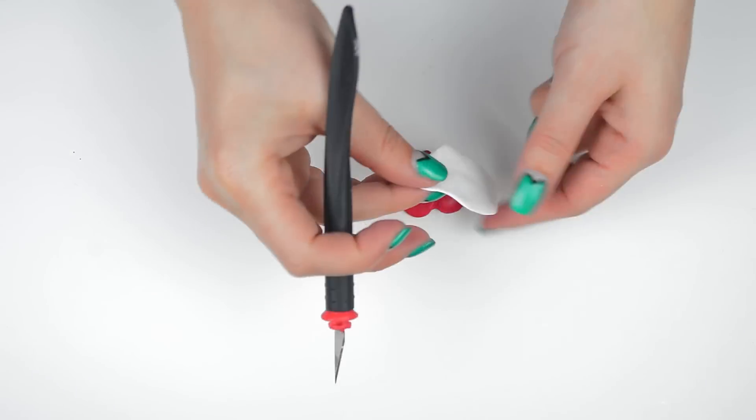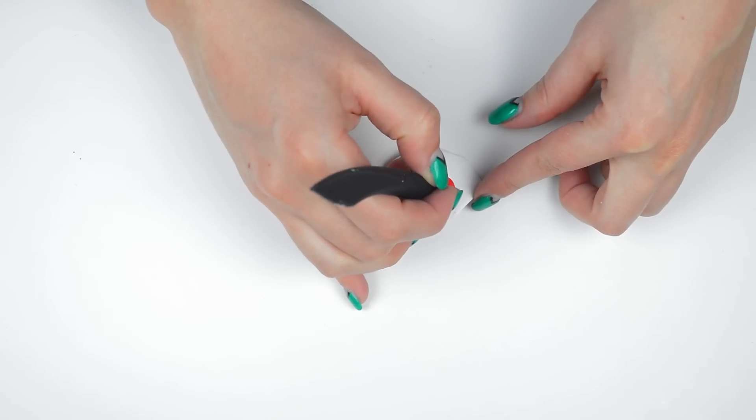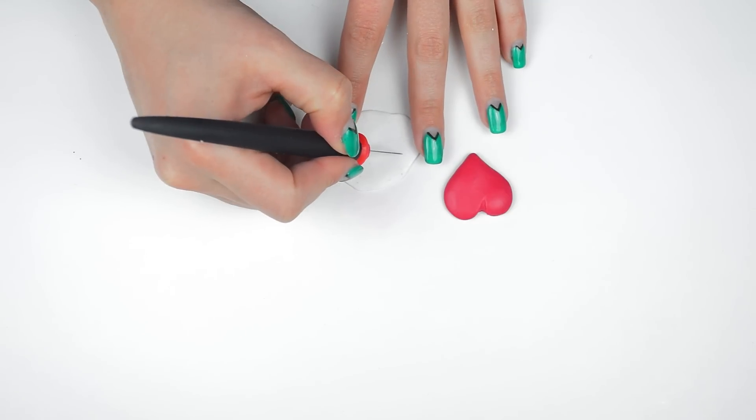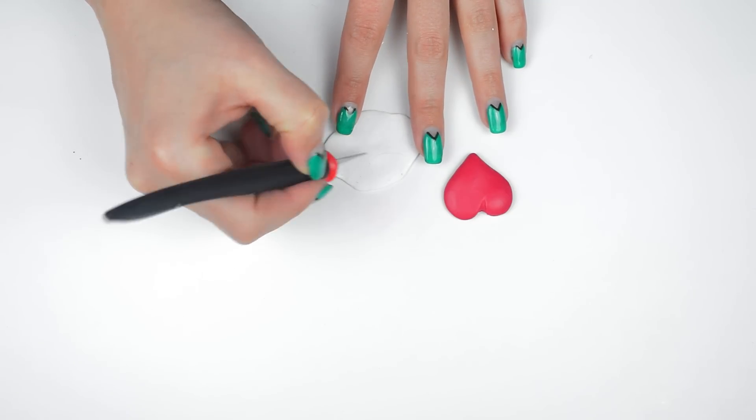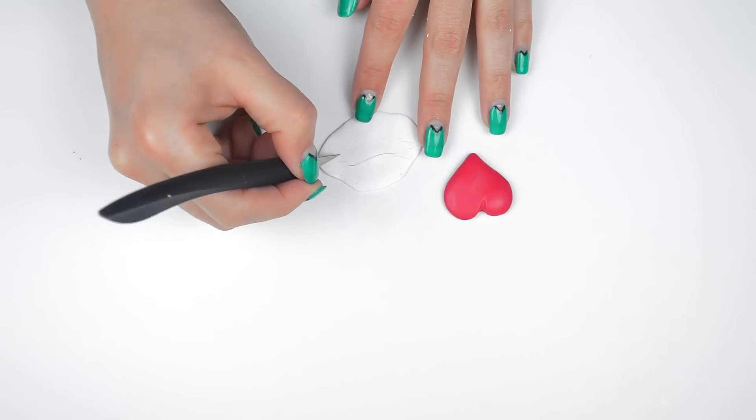Now let's add a little banner for some extra rockabilly flair. Roll out some white clay. Before you start cutting, measure on the heart to make sure it fits. Then sketch a banner and cut it out. For reference sketches, you can check the links in the description.